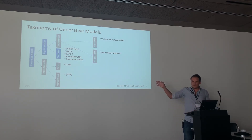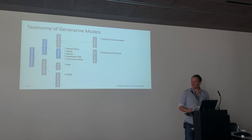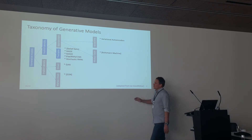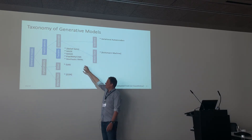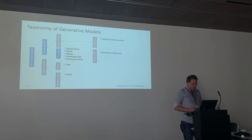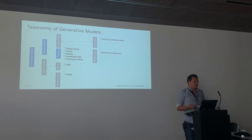Then there are models with an explicit density representation - you have a probability distribution of images you sample from. VAEs and Boltzmann machines approximate an intractable density function. And then there is a family of models with a tractable density function - you can really compute the PDF and simply sample from it. These are called autoregressive generative models. The law of deep learning says Bengio and Hinton did it all in the early 2000s, then it was redone with deep neural networks about 10 years ago - NADE and MADE are examples of that second wave.